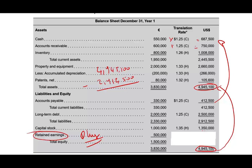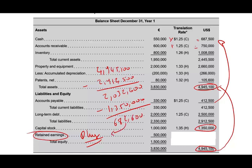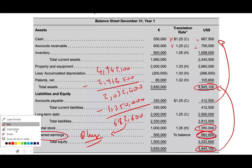Total liabilities are $2,912,500. So equity equals $4,945,100 minus $2,912,500, which is $2,032,600. We know common stock is $1,350,000, so retained earnings — the plug — is $2,032,600 minus $1,350,000, which equals $682,600. This is the retained earnings figure used to balance the balance sheet, and it's critical for computing the remeasurement gain.